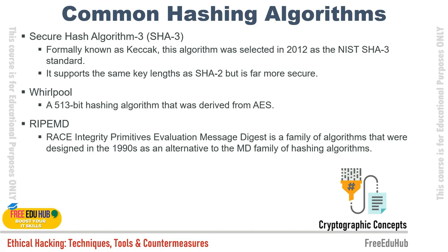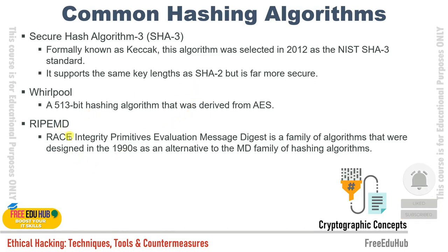SHA-3 (formerly known as Keccak) was selected in 2012 by NIST. SHA-3 supports the same key length as SHA-2 but is far more secure. Whirlpool is a 512-bit hashing algorithm derived from AES. RIPEMD is the Integrity Message Digest family algorithm designed in 1992 as an alternative to MD5.